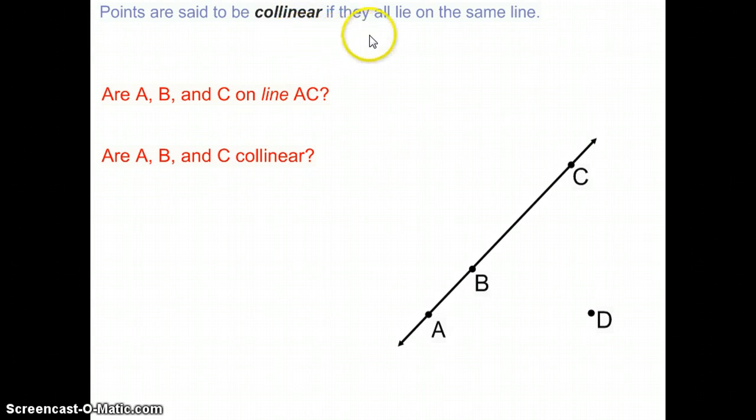To be collinear means that they all lie on the same line. So are A, B, and C on line AC? Yes, A, B, and C are on the same line. So are they? Yes would be my answer to this. Are A, B, C collinear? Yes.